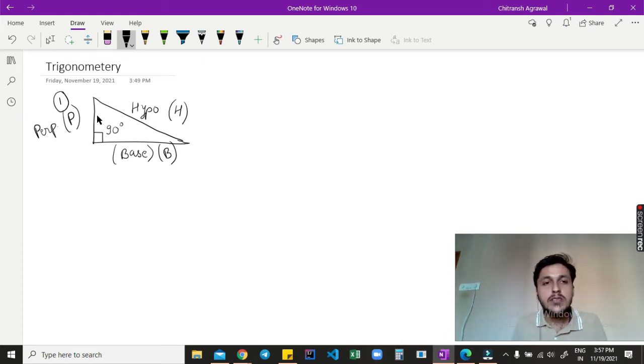Now what is most interesting about this right angle triangle is there is a Pythagoras theorem through which we can find the third side if we know the two sides of a triangle, which says the square of the hypotenuse is equal to square of the perpendicular plus the square of the base: H² = P² + B².